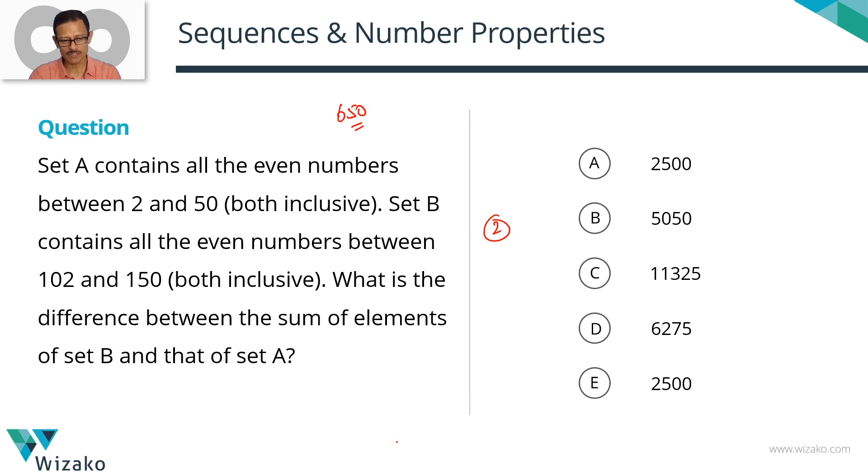Set A contains all the even numbers between 2 and 50, both inclusive. Set B contains all the even numbers between 102 and 150, both inclusive. What is the difference between the sum of elements of set A and that of set B?